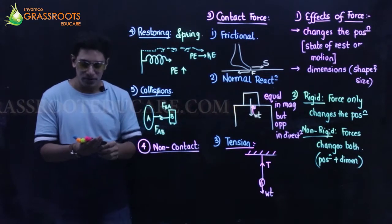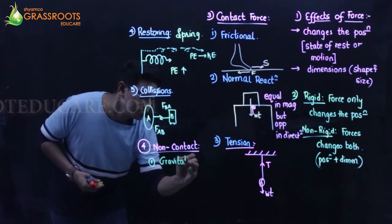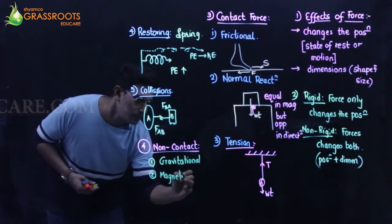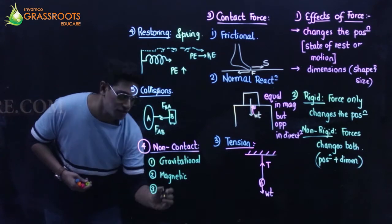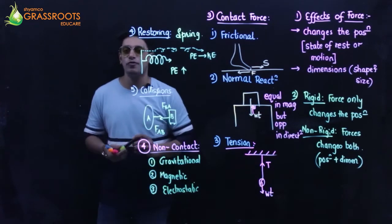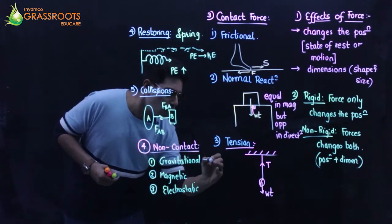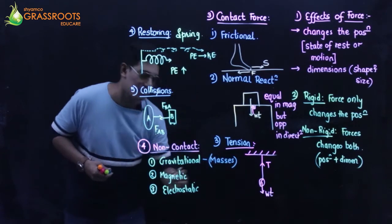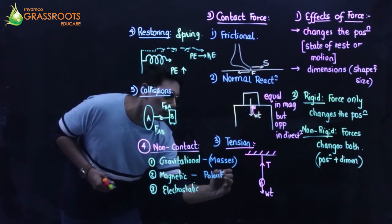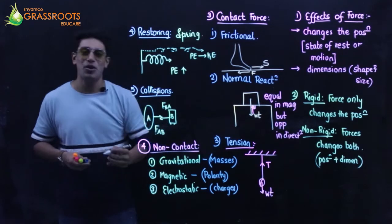There are three examples of non-contact forces: the first is gravitational force, the second is magnetic force, and the third is electrostatic force. Gravitational force depends upon the mass of the two bodies; magnetic force depends upon the poles - the polarity of the two bodies; and electrostatic force depends upon the charges of the two bodies.